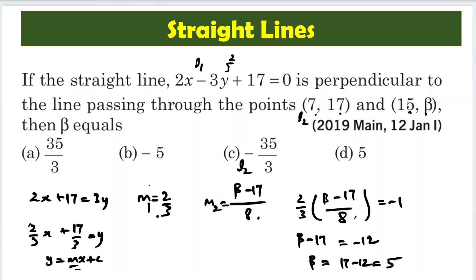Slope of l1 is 2 by 3. Now the product of these two slopes should be equal to minus 1 because these two are perpendicular. So 2 by 3 into beta minus 17 by 8 is equal to minus 1. Beta minus 17 should be equal to... this 2 will go, 2 times 4, 3 into 4, 12 should be equal to minus 12.